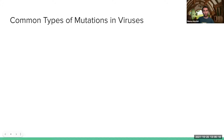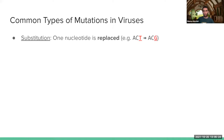Let's talk about the different types of mutations. There are a few common types that occur in viruses. The most common is a substitution — when one nucleotide gets replaced with another nucleotide. For example, a T mutated into a G.